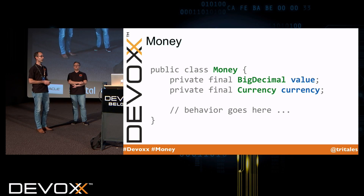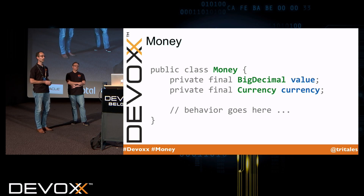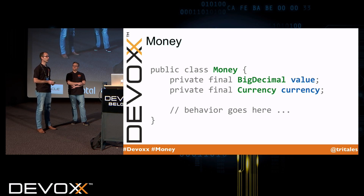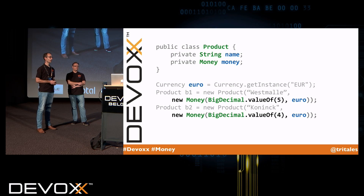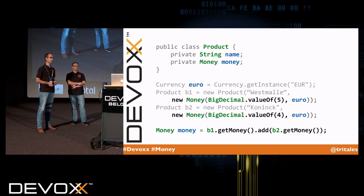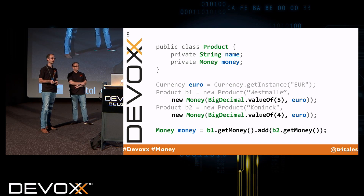So let's take a look at a better approach, and that would be to introduce a Money class which encapsulates both the value and the currency, as we see here, and also applies operations. So this is better. We apply it to our product design, and we can instantiate it by providing the BigDecimal value and the currency. And now we can apply the operations by using the Money class.